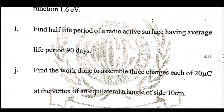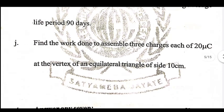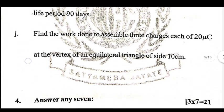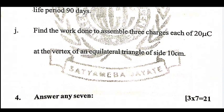Find the half-life period of a radioactive substance having an average life period of 90 days. Find the work done to assemble 3 charges, each of 20 µC, at the vertices of an equilateral triangle of side 10 cm.